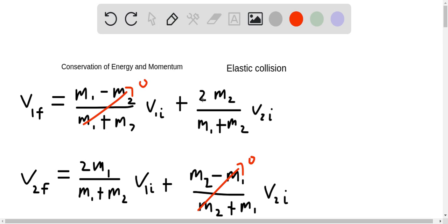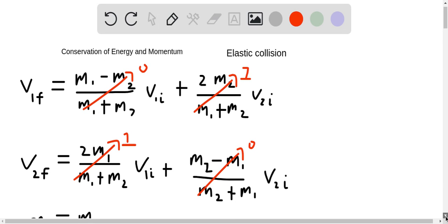If M1 equals M2, you have 2M2 divided by M2 plus M2, which is 2M2. So this value goes to 1, and you have 2M1 over M1 plus M1, this value also goes to 1. So simply based on the fact that those are equal...